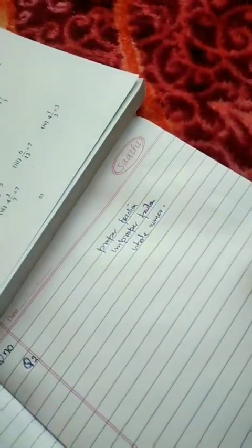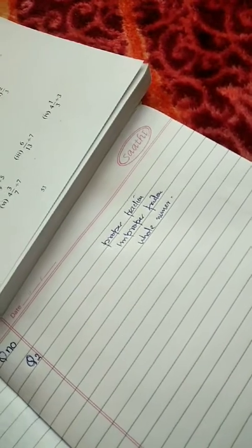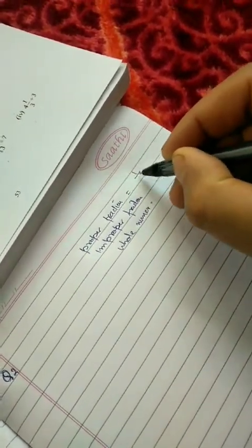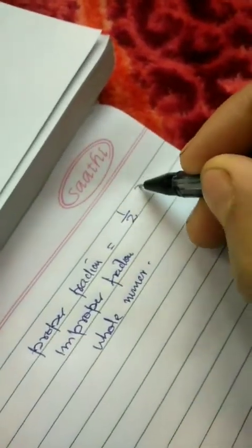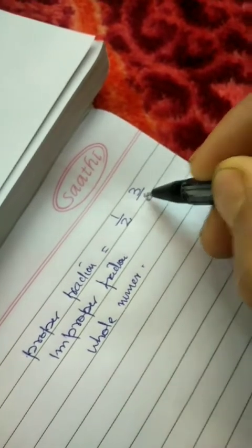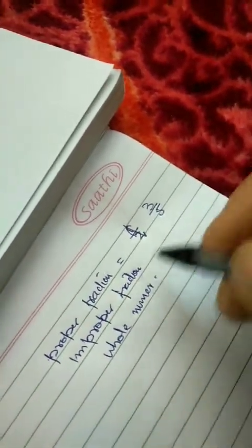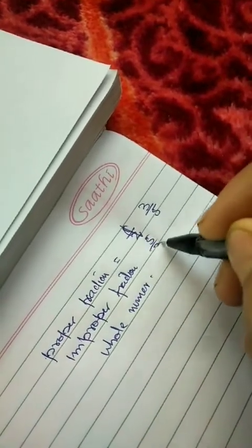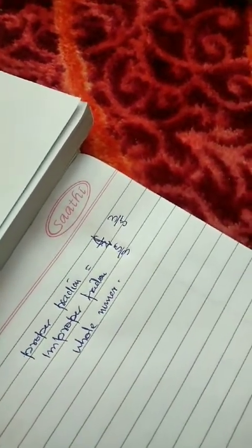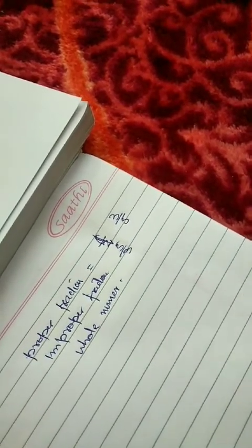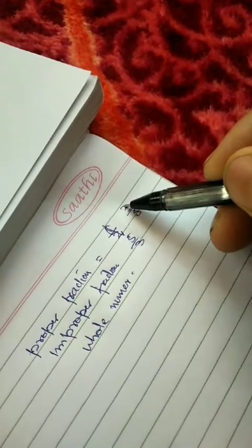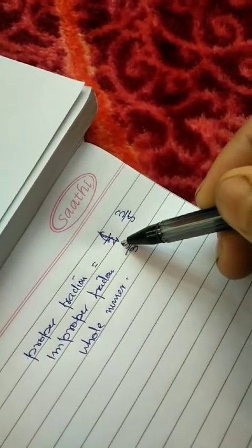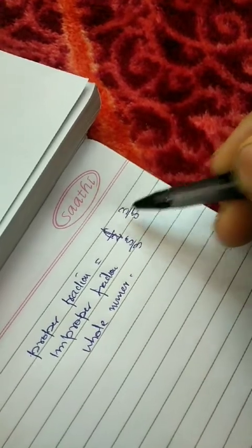For proper fraction, the numerator is less than the denominator. For example, 3 by 5 - the denominator is greater. The improper fraction is 5 by 3, where the denominator is smaller.